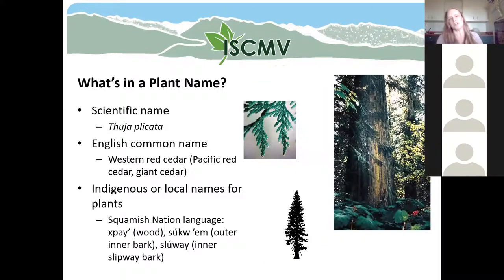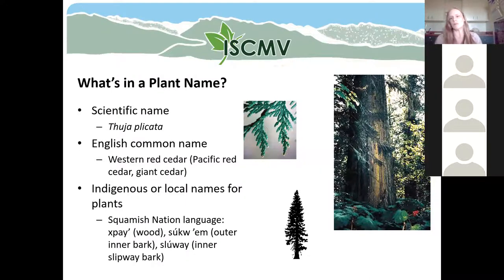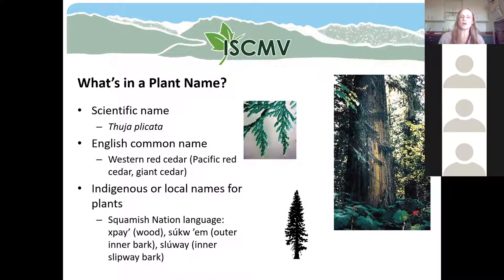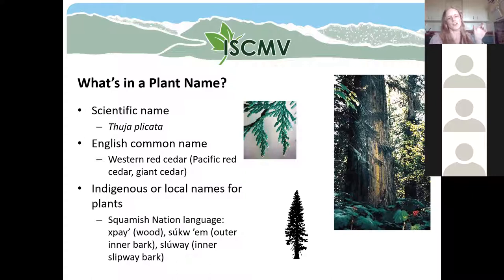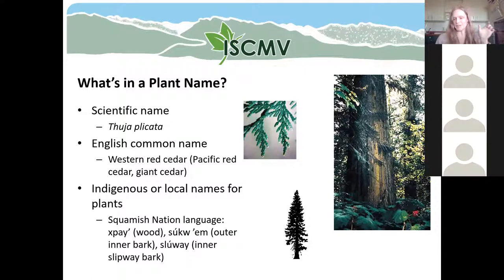Let's start with what's in a plant name. Plants have lots of different kinds of names. One of the most common ones that scientists use is the scientific name. There are two parts to a plant scientific name — the first part is called the genus and the second part is called the species.